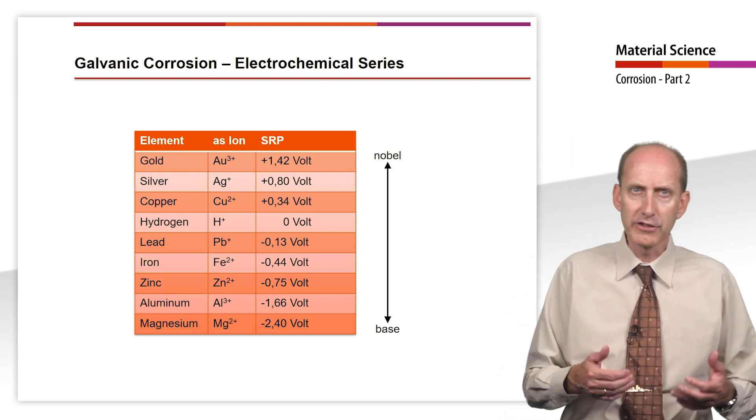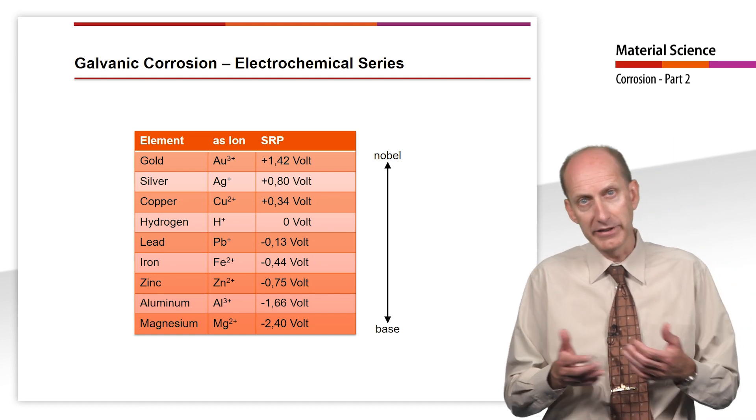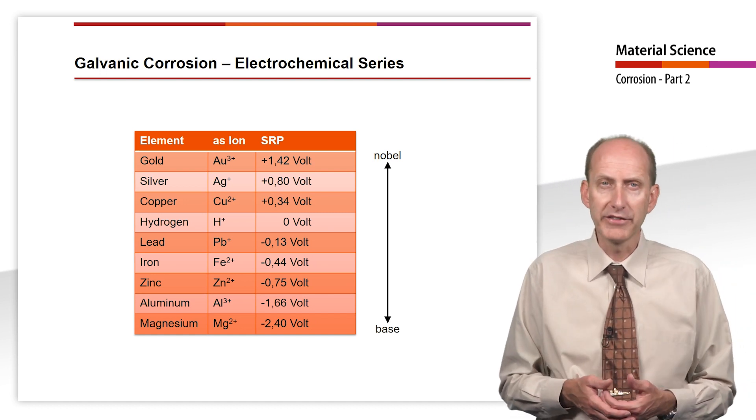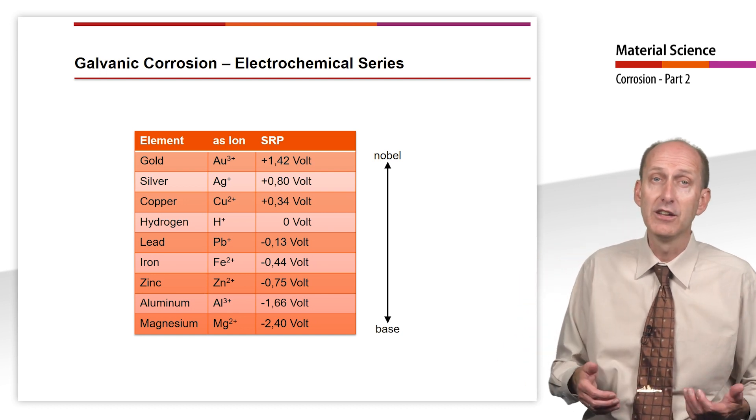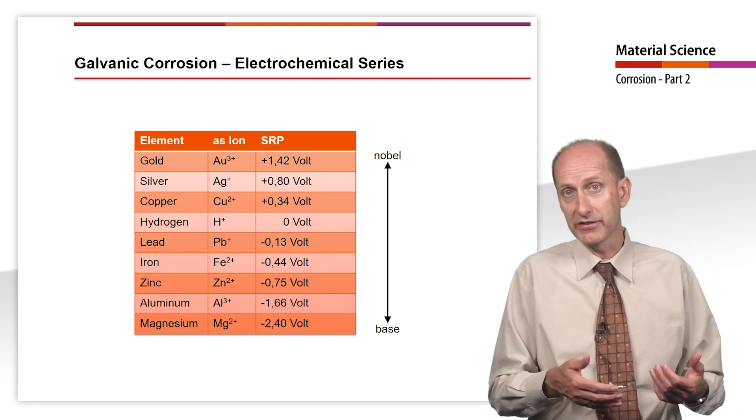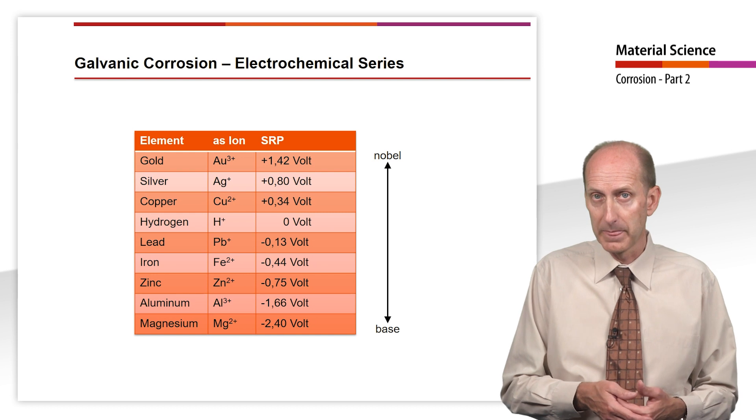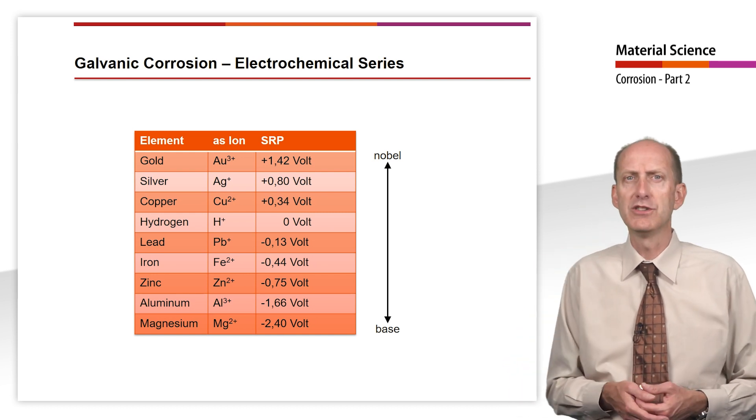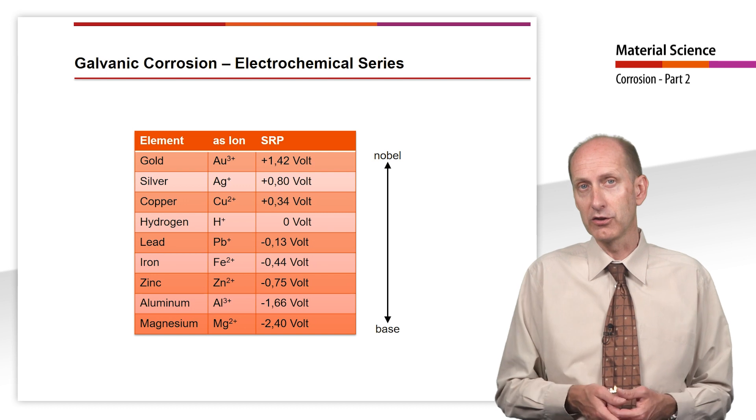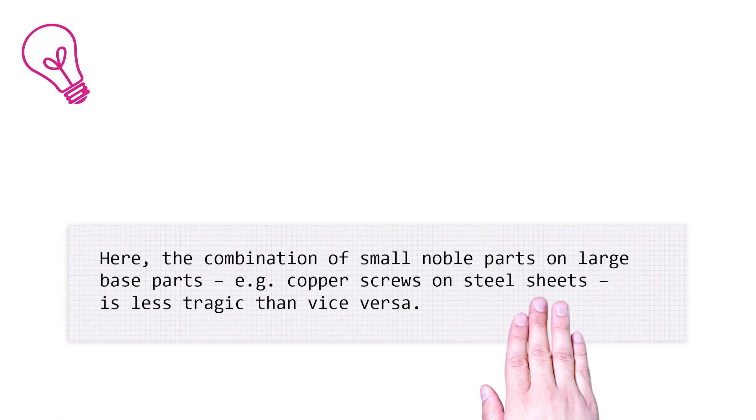In the constructive combination of more noble materials with less noble ones, this means the presence of an electrolyte can lead to the formation of a local galvanic cell, as we have just learned. Here, rapid erosion of the less noble component in electrolytic solution can occur.